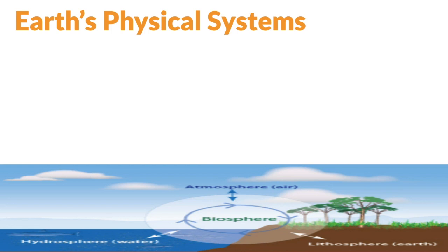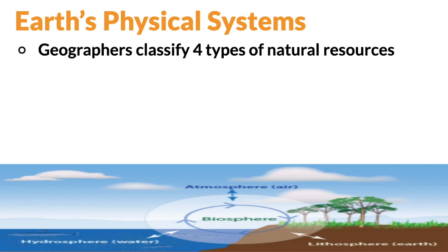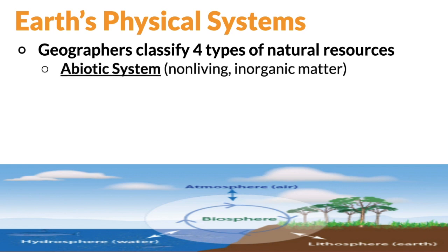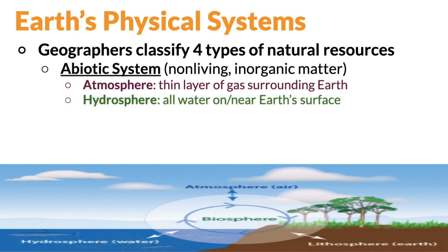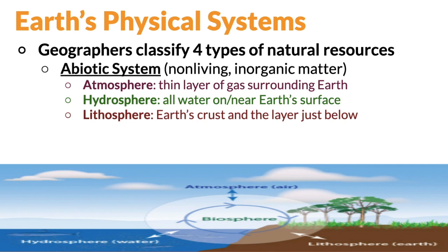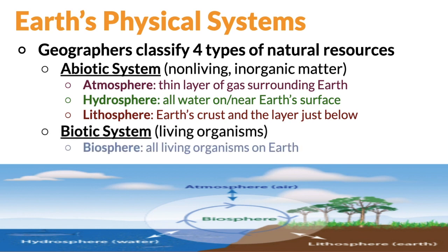The earth is made up of physical systems, and we have to understand these four different types of natural resources before talking about how we alter their use. There are abiotic systems — non-living, inorganic — and biotic systems. The abiotic systems are: atmosphere (gas), hydrosphere (water), and lithosphere (the physical earth's crust and the layer just below it). The biotic system — the biosphere — is everything that's living, all the living organisms on earth. So there are three abiotic systems and one biotic system, the biosphere.